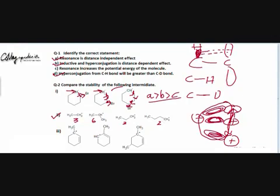The intermediate having the highest number of CH bonds participating in hyperconjugation will be most stable. The second intermediate is most stable, followed by the first. In the third and fourth intermediates we have equal amounts of hyperconjugation. So hyperconjugation cannot give us the answer for those two because the extent is the same.